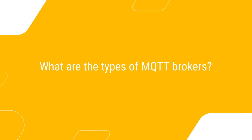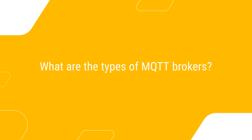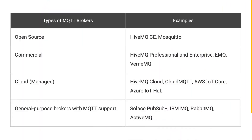What are the types of MQTT brokers? Currently an MQTT broker is available in the following options: open source, commercial, cloud managed, and general purpose brokers with MQTT support. You can see the examples of each type on the screen now.